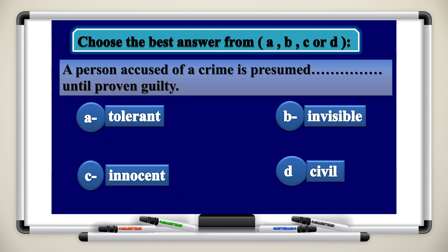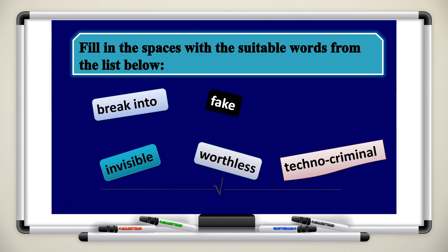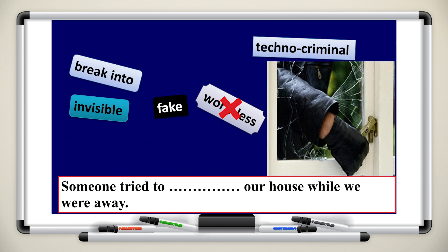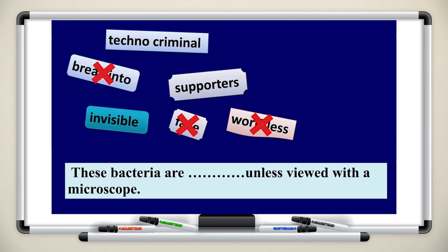Let's look at this vocabulary practice. Choose the best answer from A, B, C, or D. A person accused of a crime is presumed — until proven guilty — innocent. Employers have a legal duty to ensure the safety of their workforce. Now fill in the spaces with the suitable word from the five given. The secretary was criticized so much that she began to feel worthless. Someone tried to break into our house while we were away. The passenger was charged with possessing a fake passport. These bacteria are invisible unless viewed with a microscope.